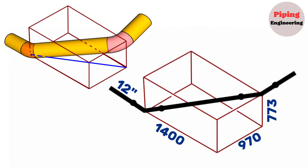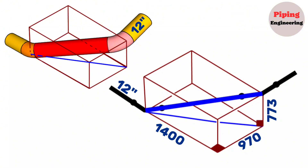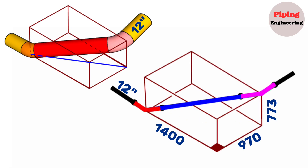We will perform the calculations in this video on a 12-inch pipeline. To find the length of the red color pipe piece between these two elbows, first we must calculate the distance between the centers of the elbows. Next we need to find the lengths of the 12-inch cut elbows, and finally subtract the lengths of the cut elbows and the gaps for welding from the total length. Let's go step by step.